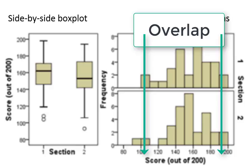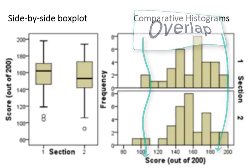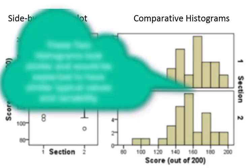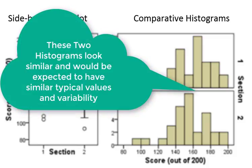For the histograms that you're looking at here, we can see that they look fairly similar to one another. So the two groups I would expect to have fairly similar typical responses and fairly similar variability.